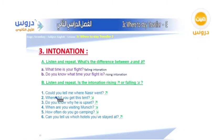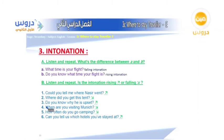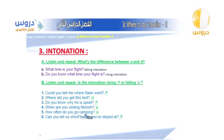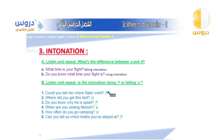More examples: 'Can you tell me where Nabil went?' — rising. 'Where did you get this tent?' — falling. 'Do you know why he is upset?' — rising. 'When are you visiting Munich?' — falling. 'How often do you go camping?' — falling. 'Can you tell us what hospital you stayed at?' — rising.